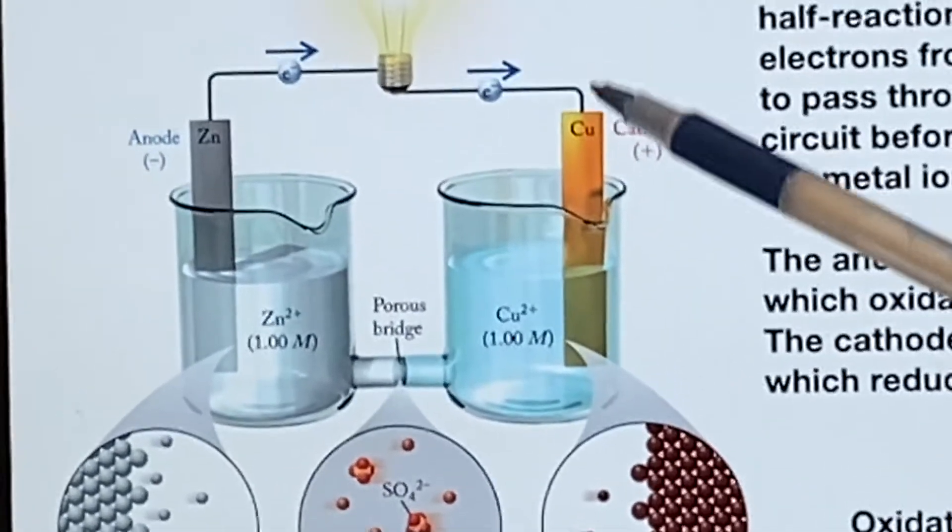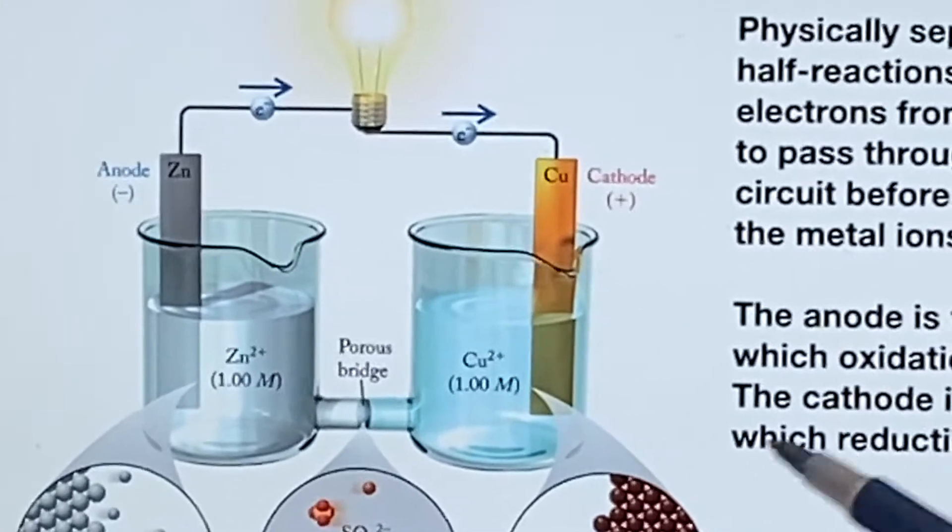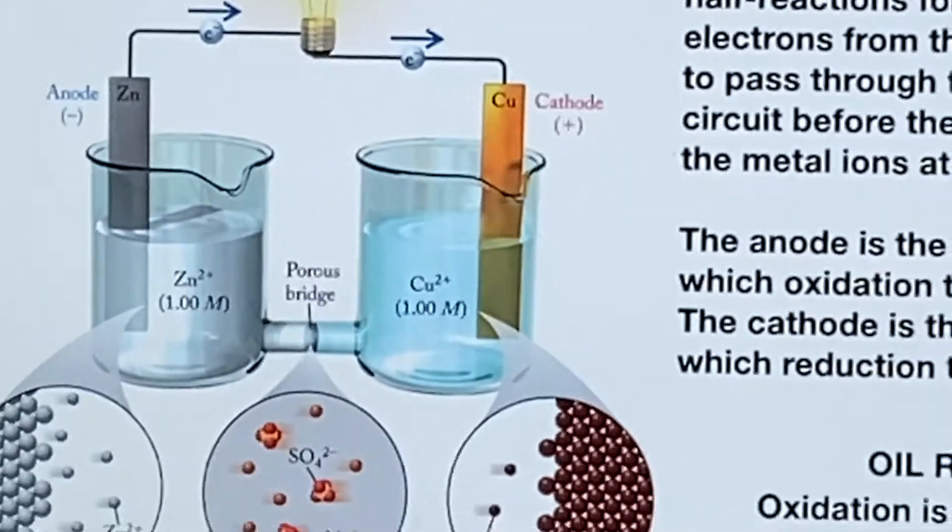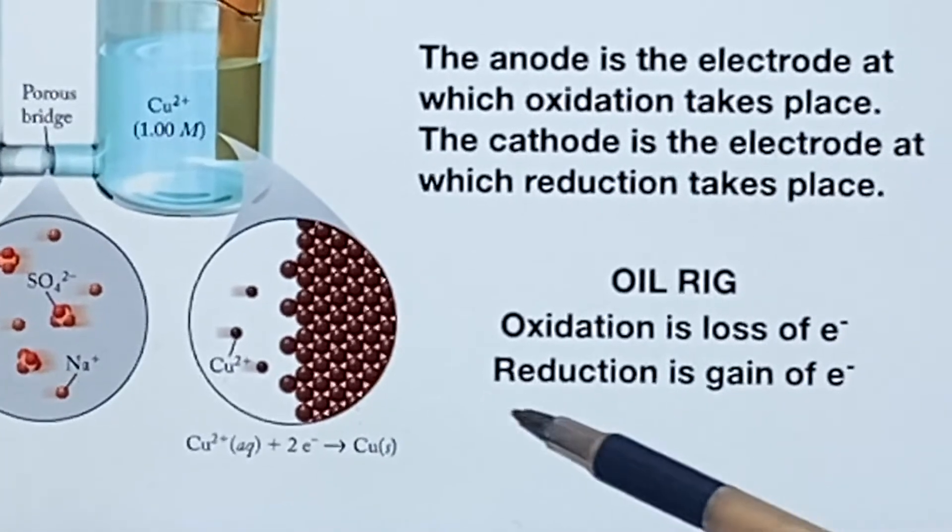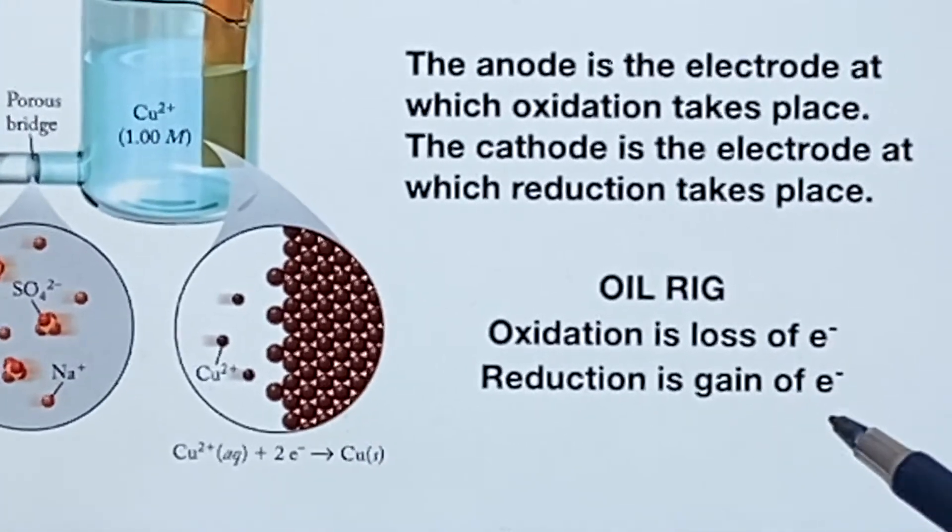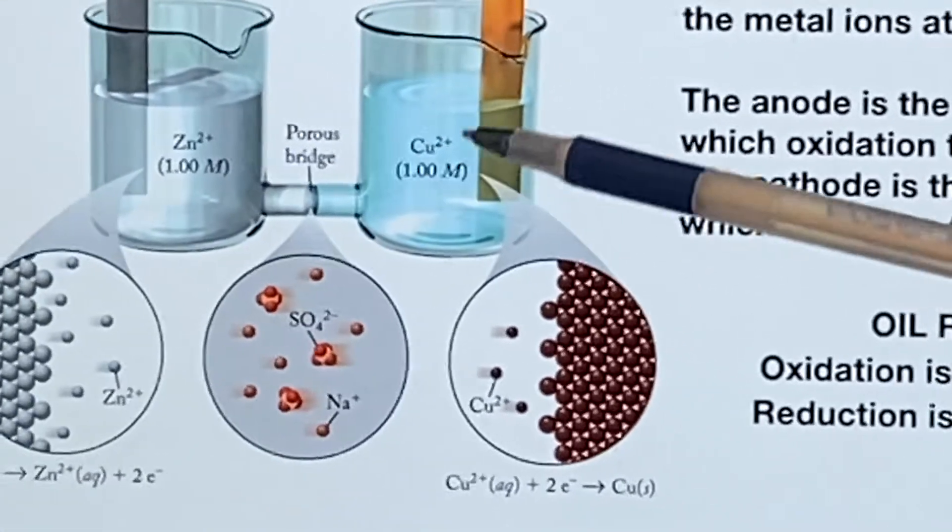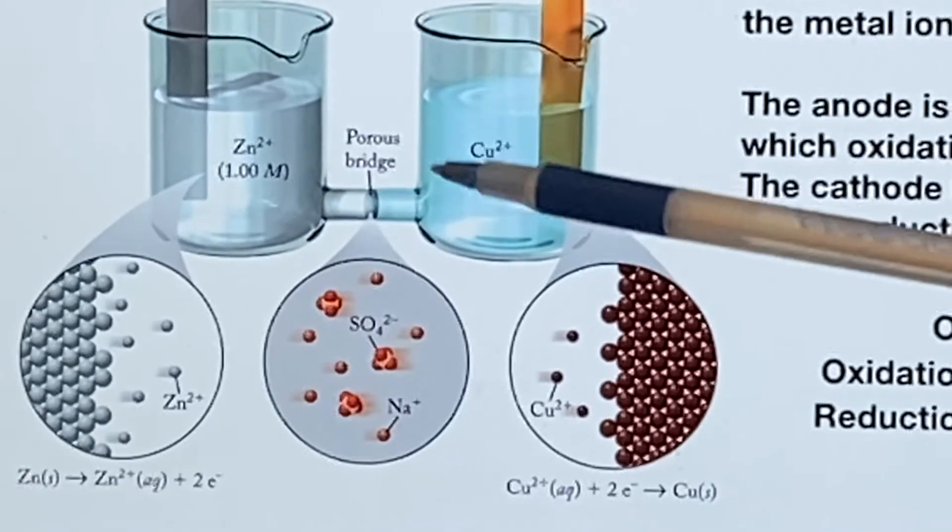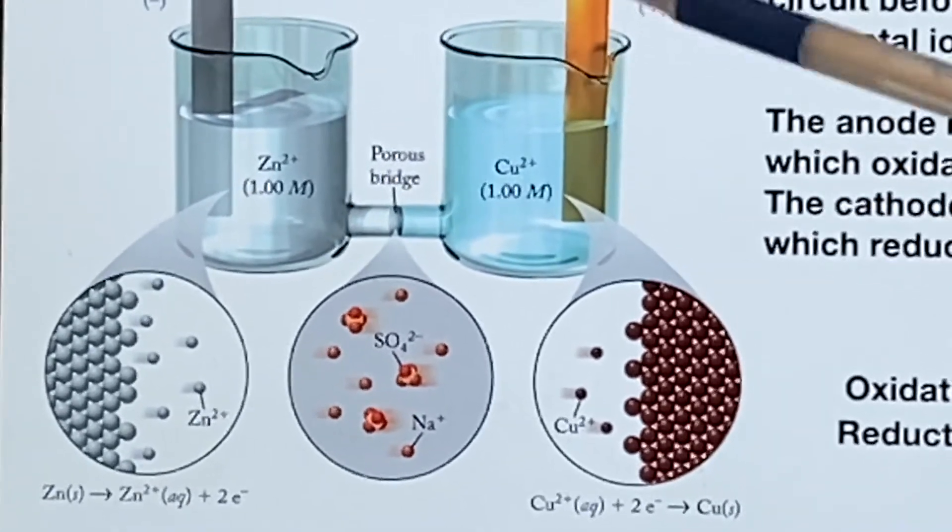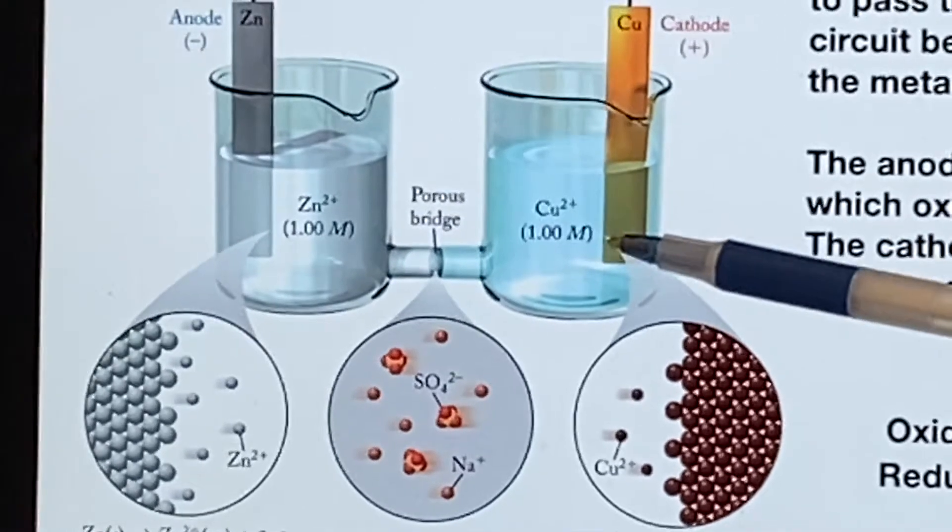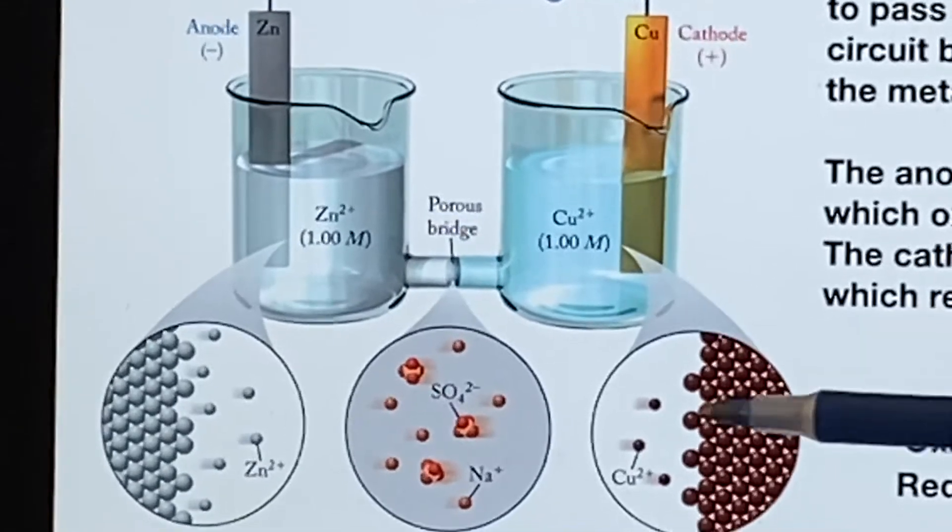On the other hand, when it gets over here to the cathode, cathode is where you have the reduction. And so reduction is gain. Reduction is gain of what? The electrons, which means the number is going to go down. It goes from the copper that's a plus two that's in the solution, aqueous, to plating onto the cathode here. And so this will actually gain mass as these plate onto it.